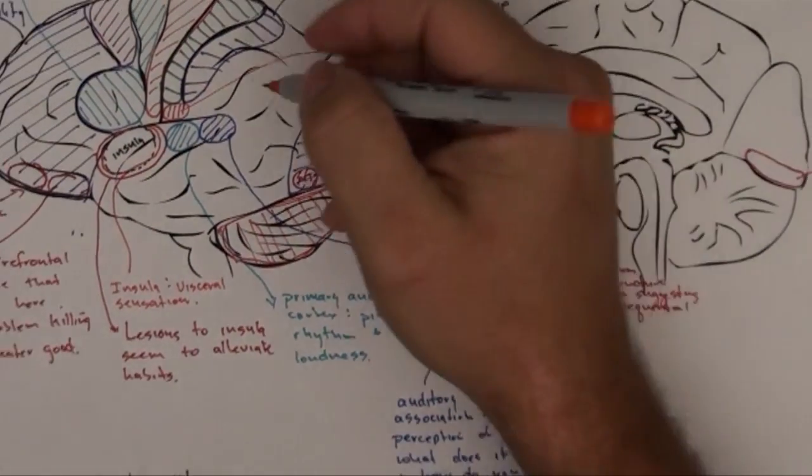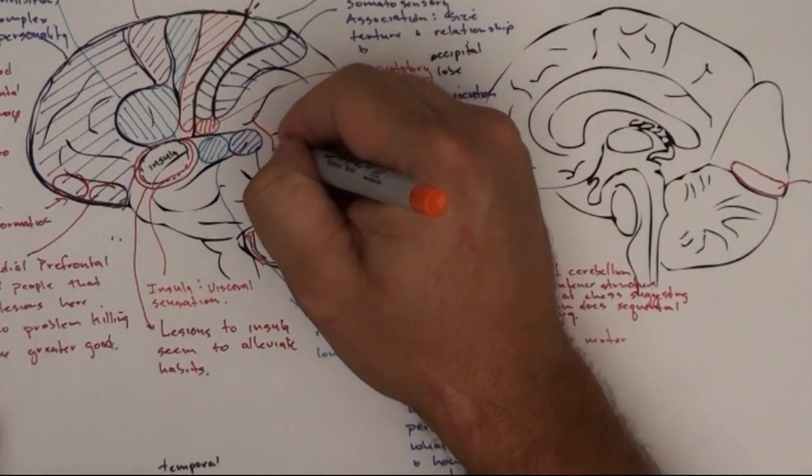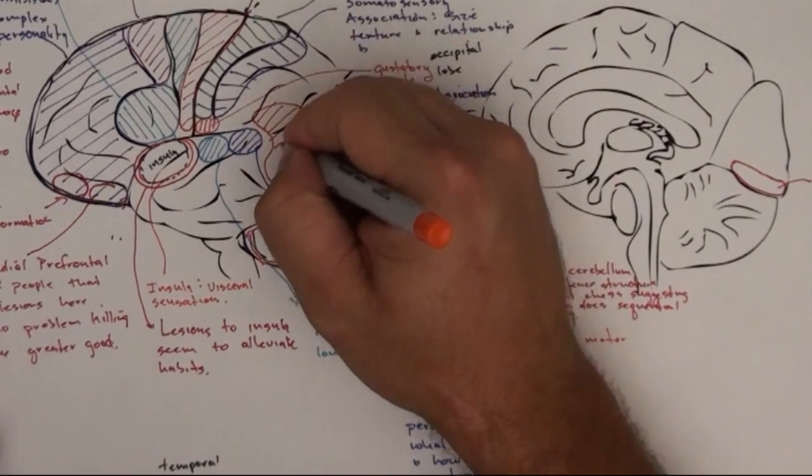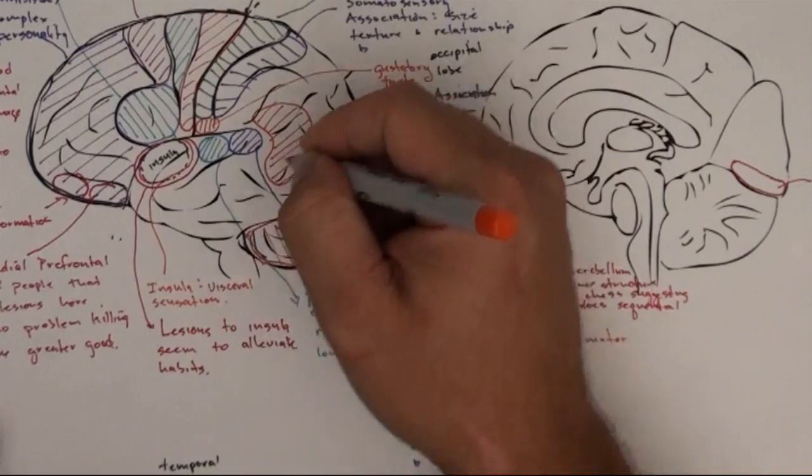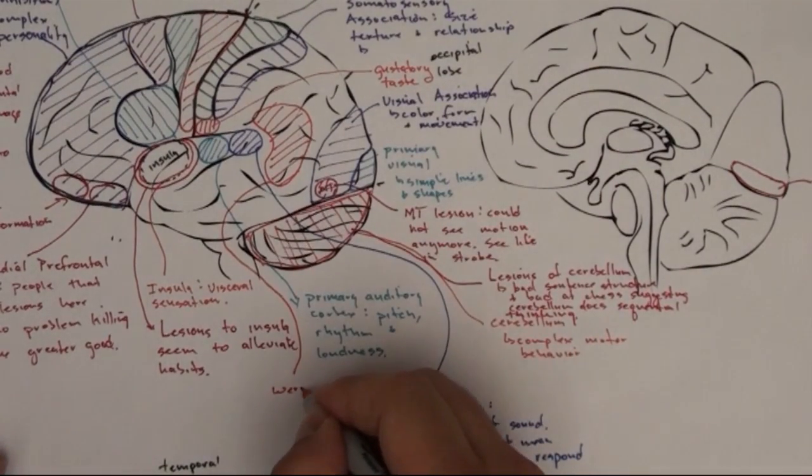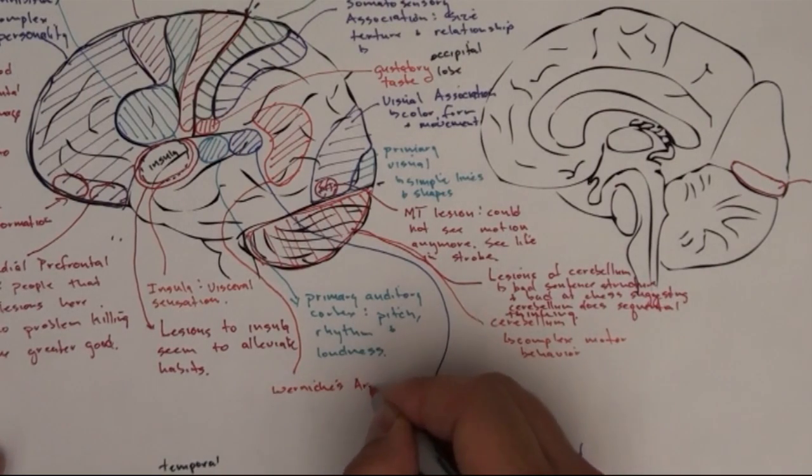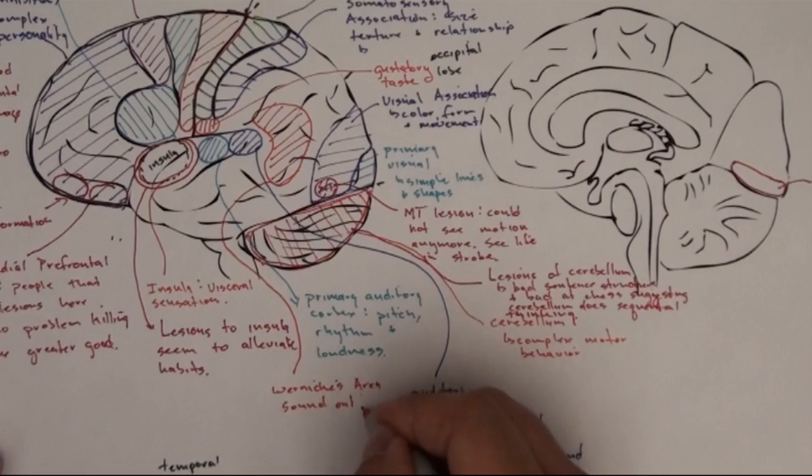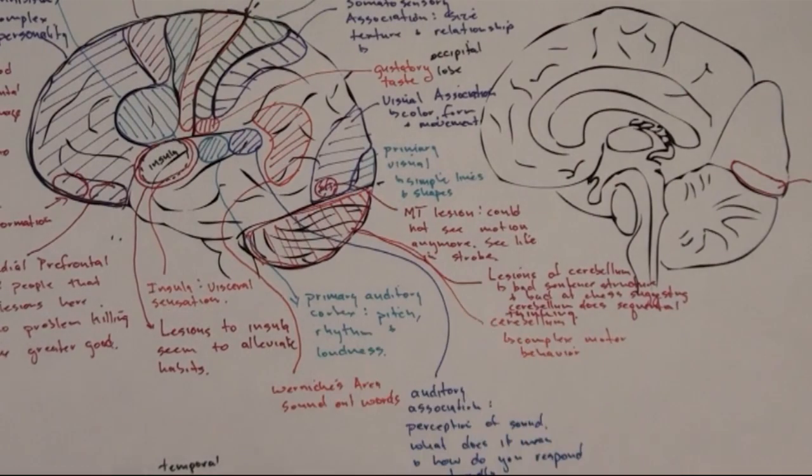There's a little area in here called Wernicke's area. Helps you sound out words. So if you need to pronounce Wernicke's for the first time, you're probably going to say it Wernicke's, and your Wernicke's area is going to be very active at that point.